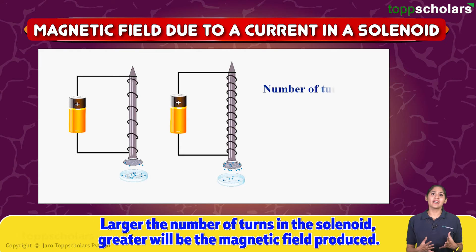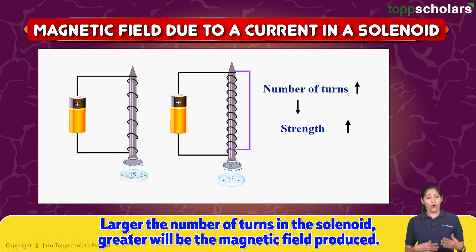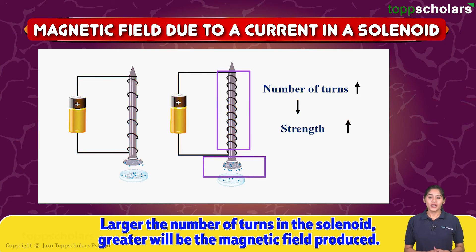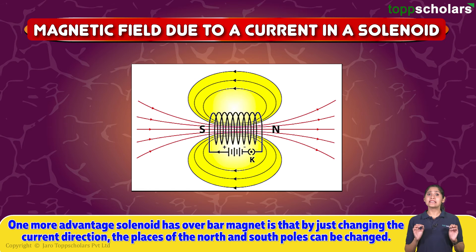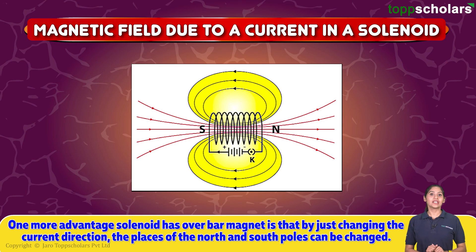The larger the current passed through a solenoid, the stronger will be the magnetic field produced. Also, the larger the number of turns in the solenoid, the greater the magnetic field produced. One more advantage that a solenoid has over a bar magnet is that by just changing the current direction, the positions of the north and the south pole can be changed.